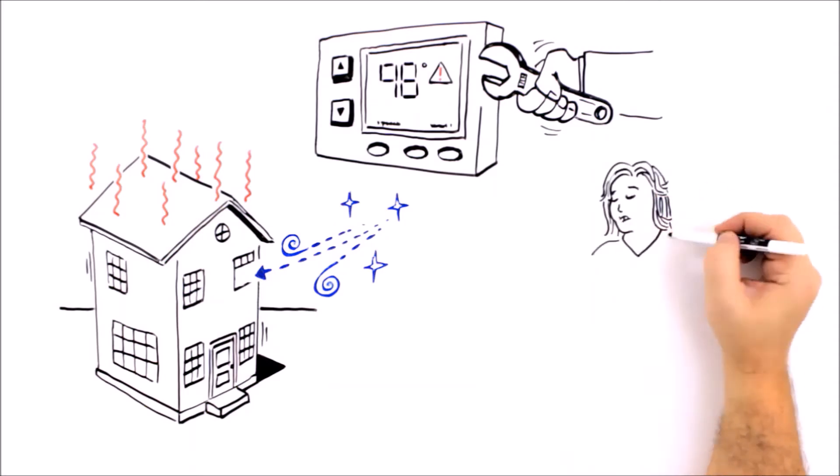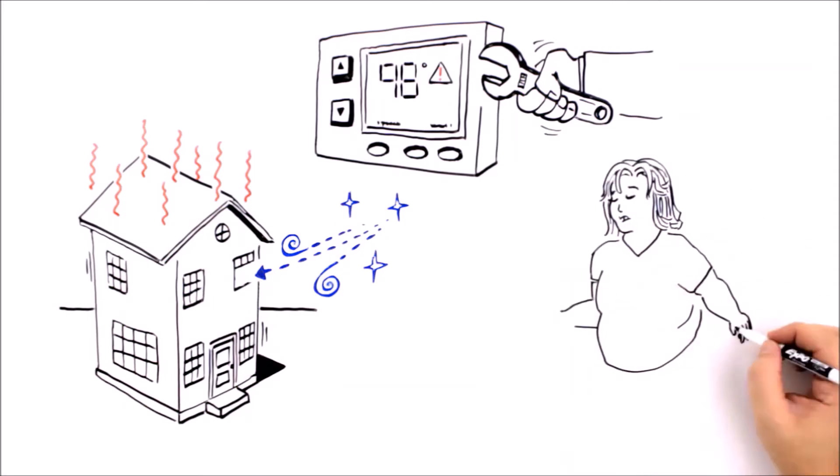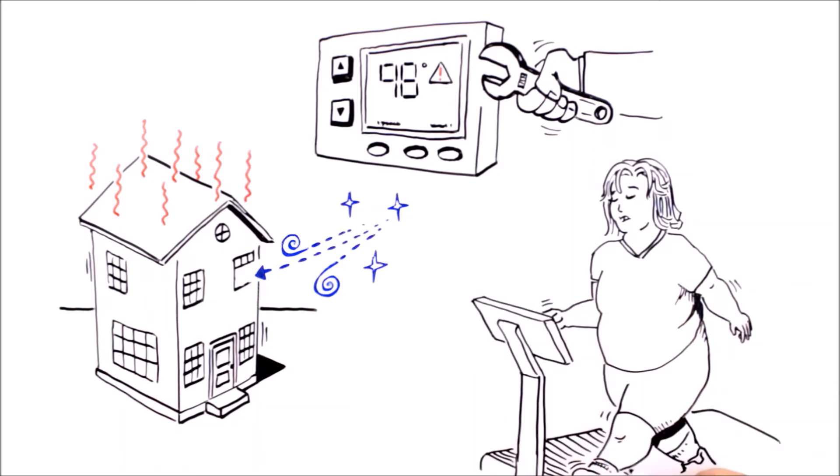This might explain why treating obesity with diet and exercise so often fails to produce the desired results. It's sort of like telling Amanda to open the window to let some cool air in, when the real problem is that she needs a mechanic to fix her thermostat.